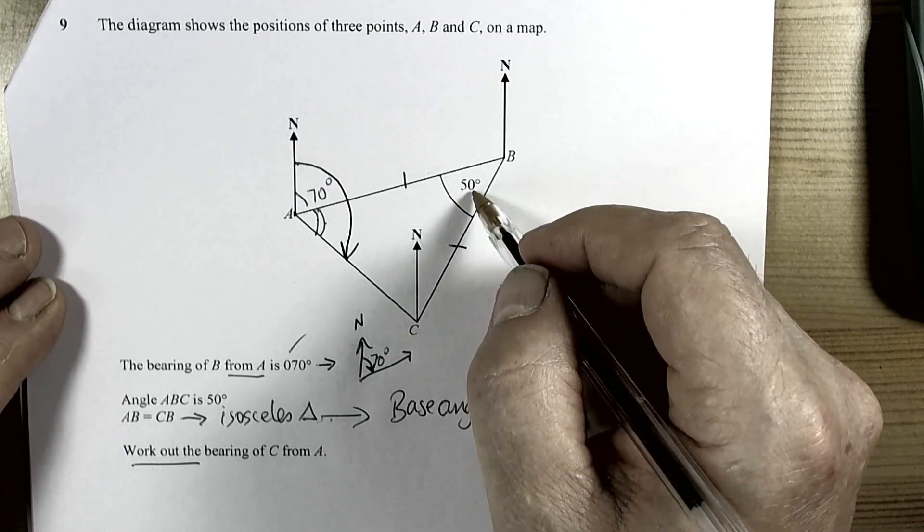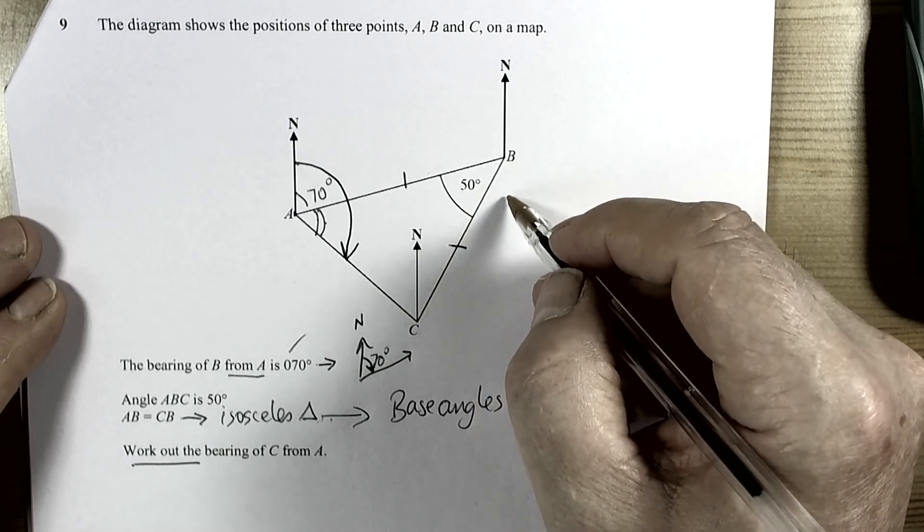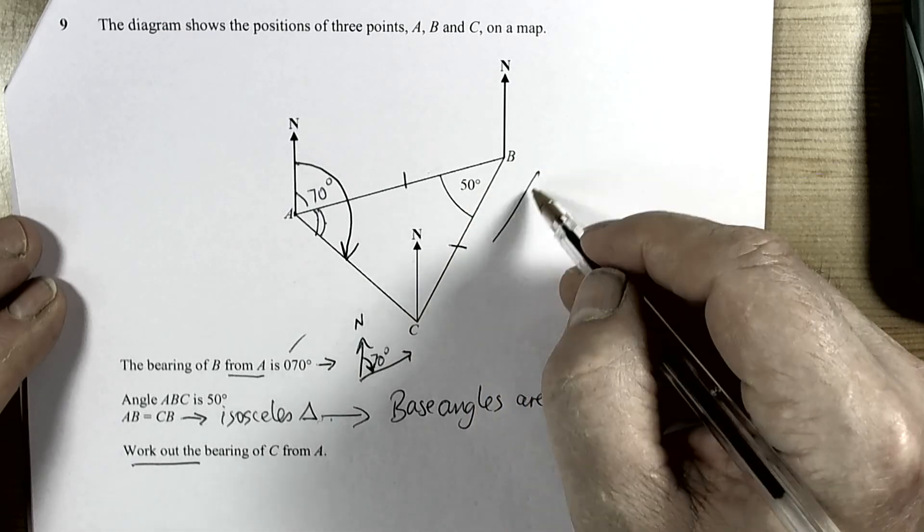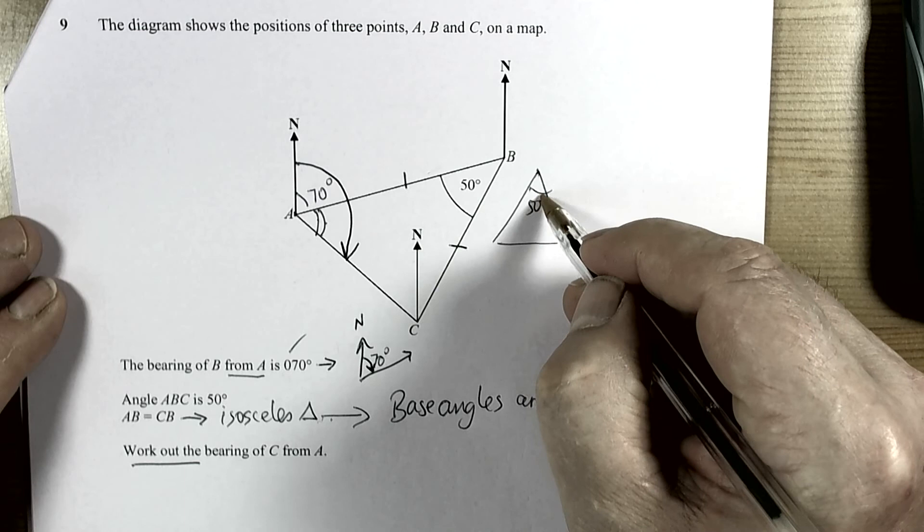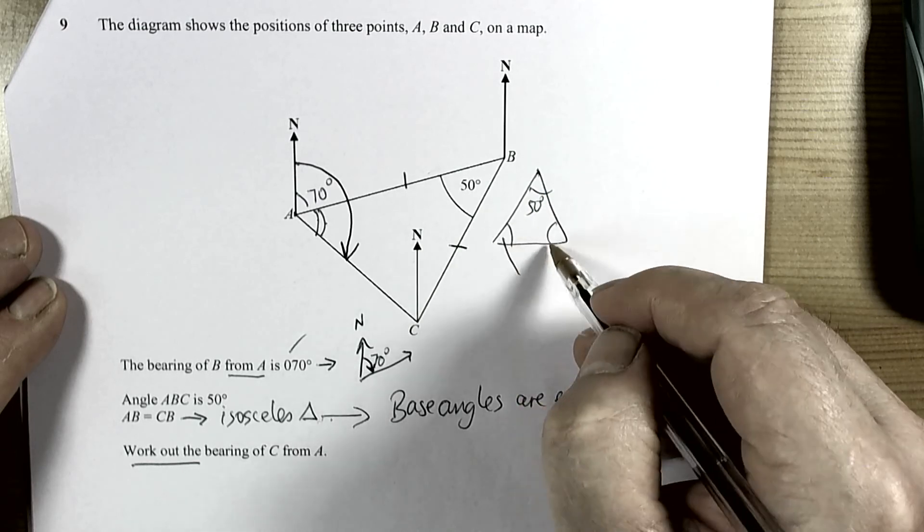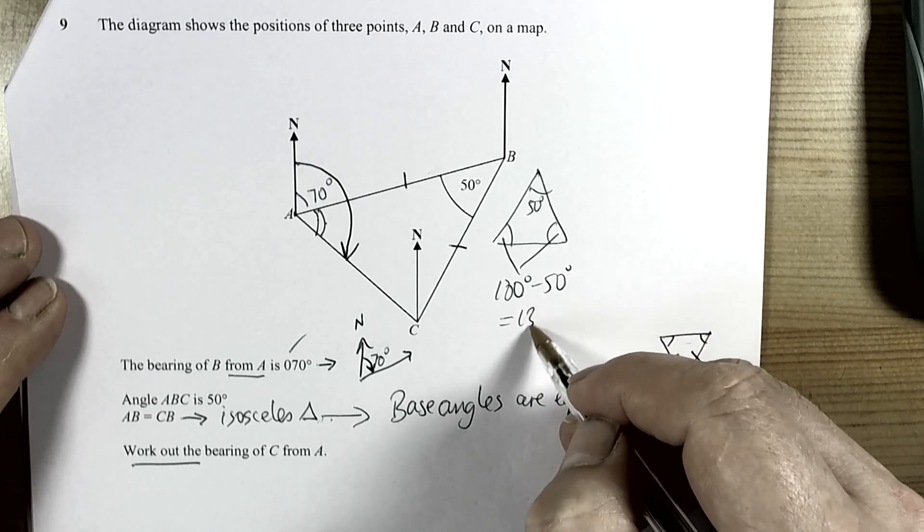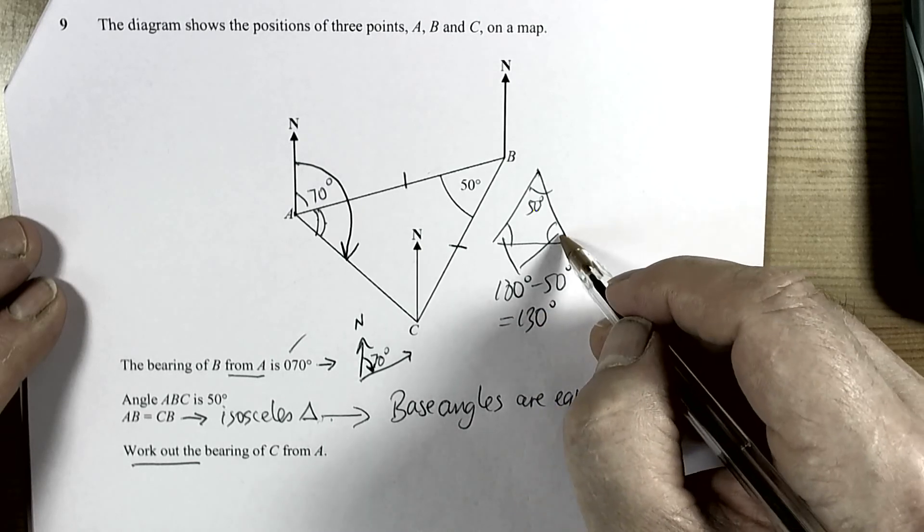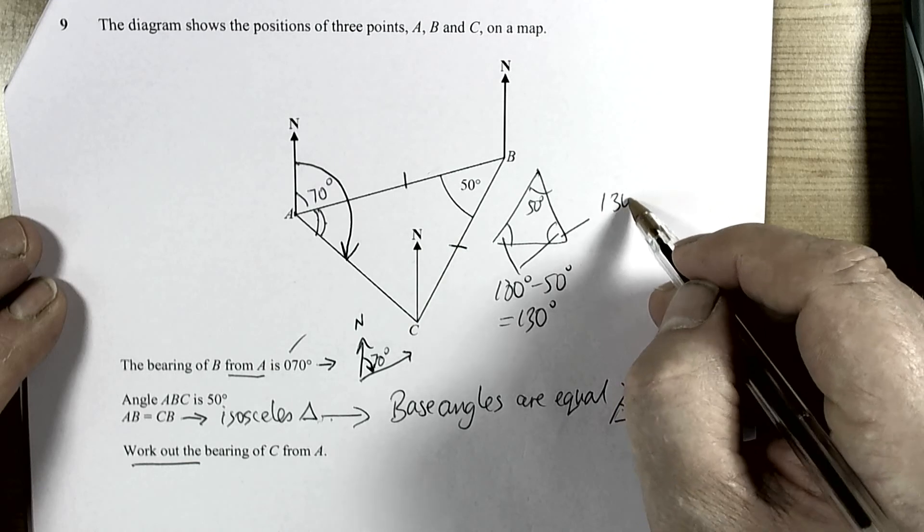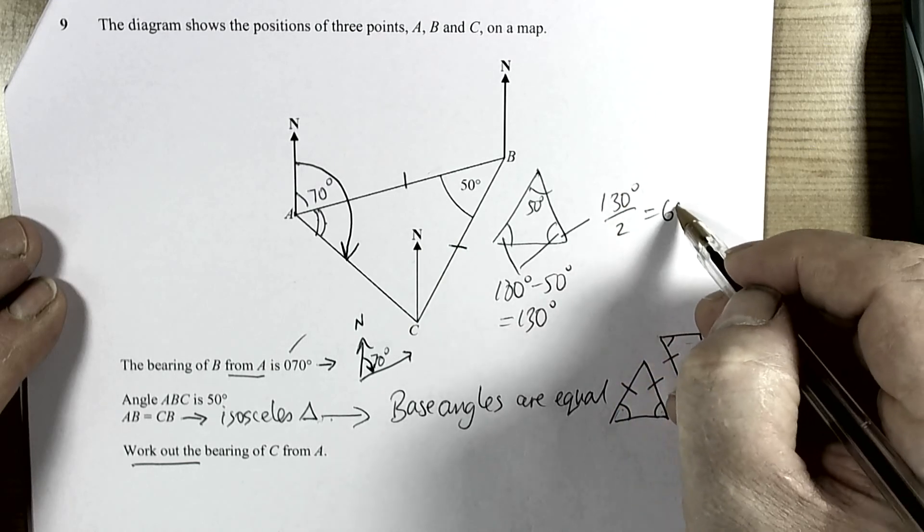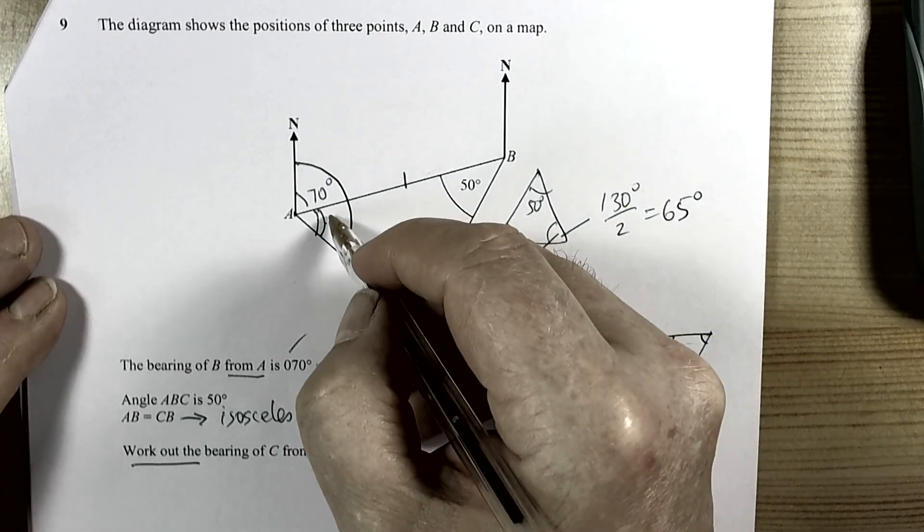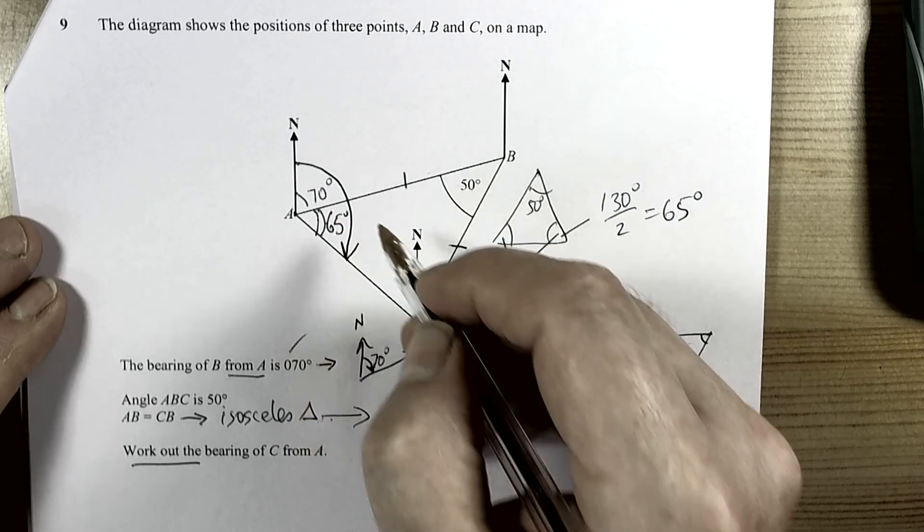So if this is 50 degrees then we know that triangle adds up to 180. So if that's 50 degrees then these two must be 180 minus 50 degrees and therefore one of them will be 130 degrees divided by 2. OK so we now know that this angle here is 65 degrees.